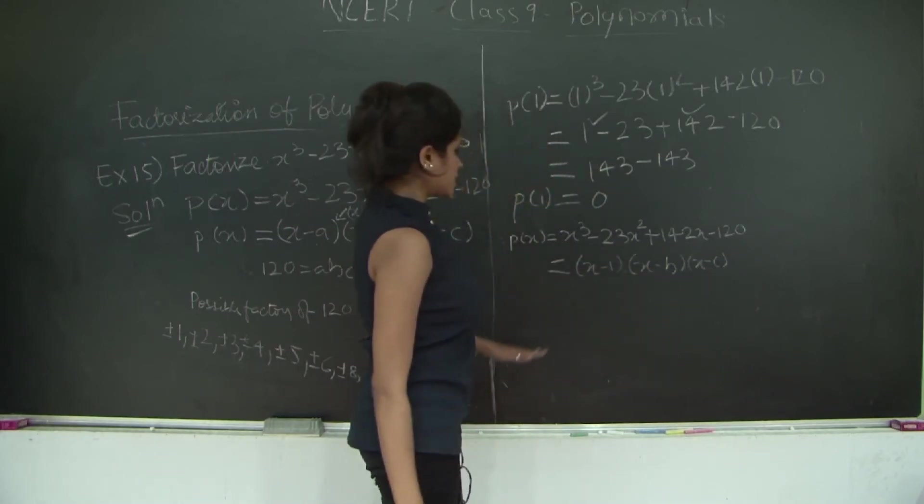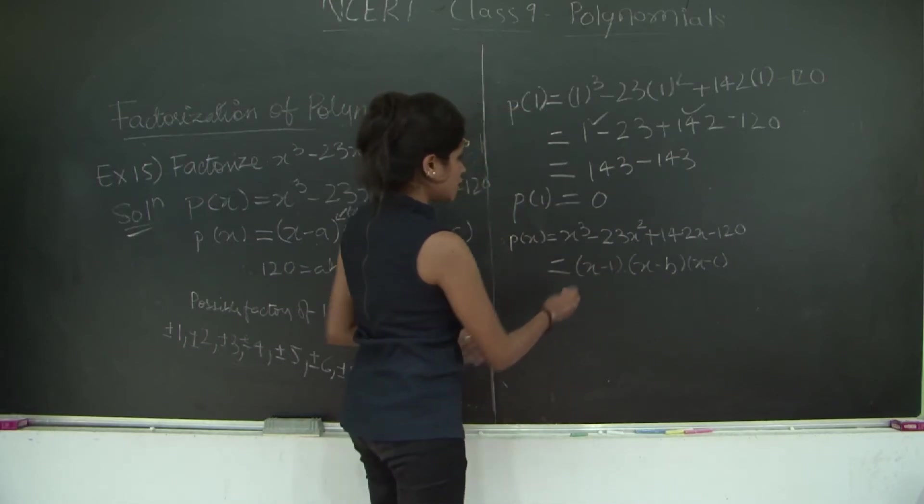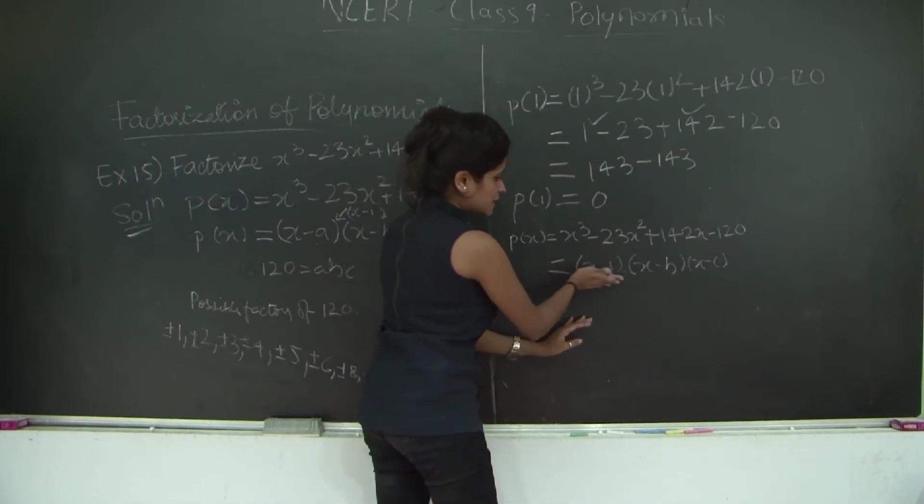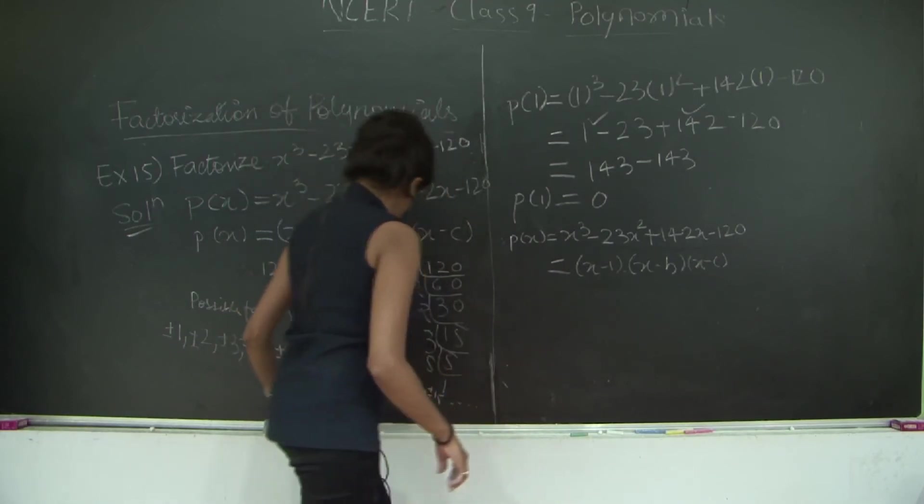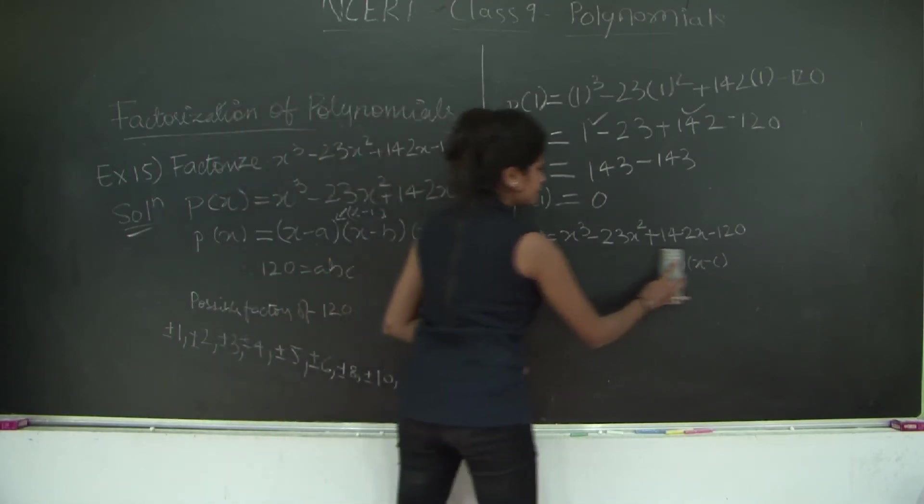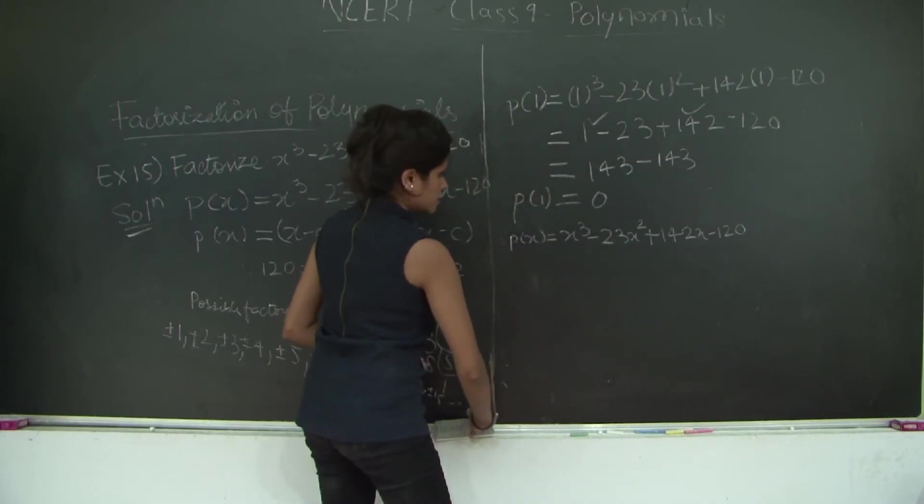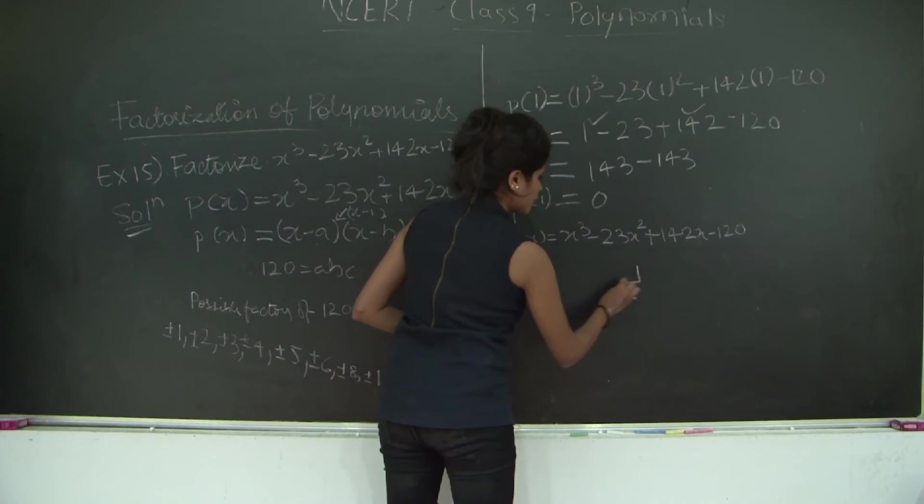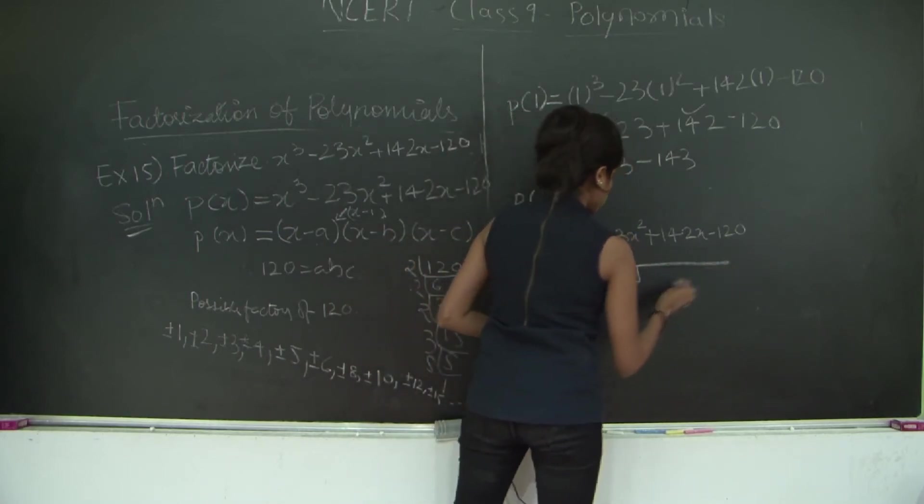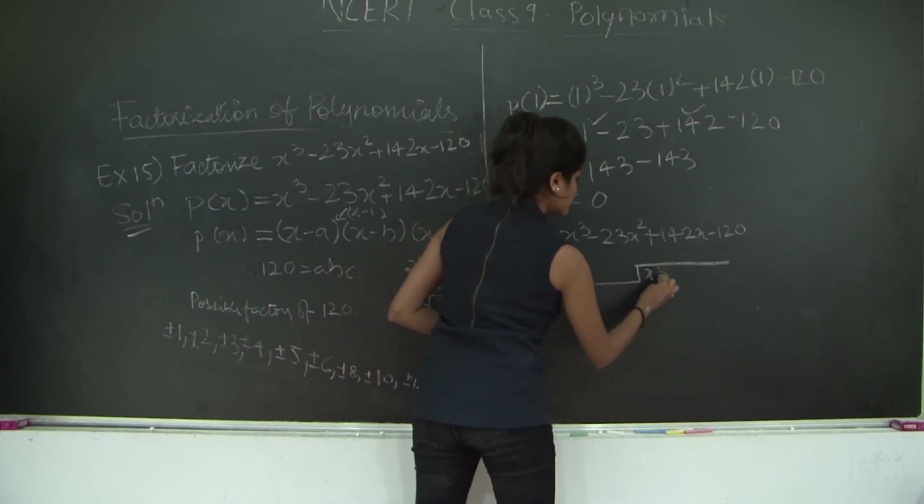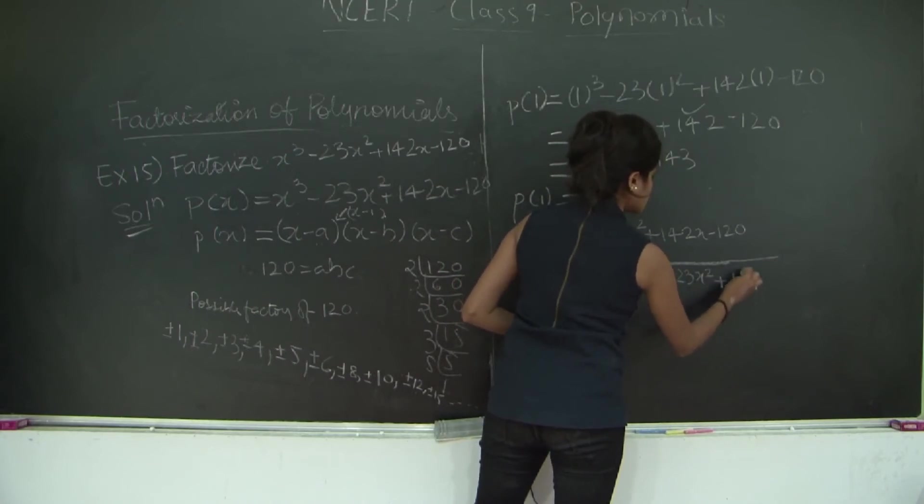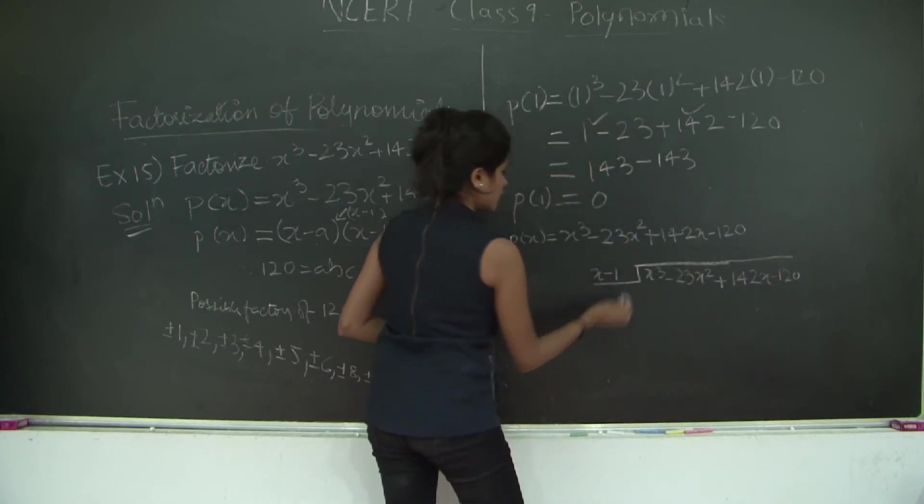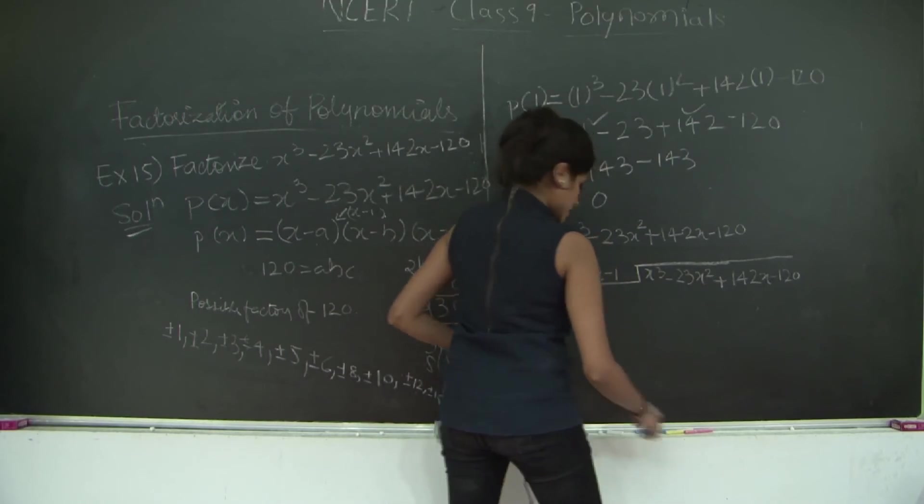Now how do we find (x - b)(x - c)? We can use the long division method. We will use x - 1 as the divisor and this as the dividend, and we will be able to find the quotient which we will use to further re-divide.